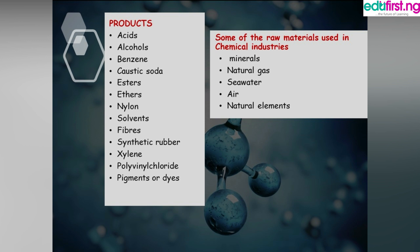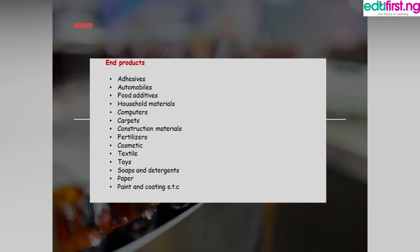Products gotten from these raw materials include acids, alcohols, benzene, caustic soda, esters, solvents — things used to dissolve substances — synthetic rubber, silicone, polyvinyl chloride, and pigments or dyes. End products include automobiles, food additives, household materials, computers, carpets, construction materials, fertilizers, cosmetics, textiles, toys, soaps and detergents, paper, and paints and coatings. For example, caustic soda gives us soaps and detergents.